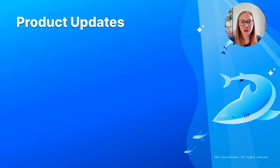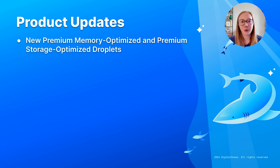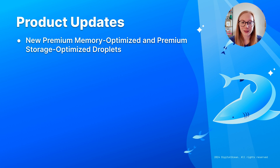First, we're excited to share some new product updates for droplets, app platform, and more. We have just announced the release of premium memory-optimized and premium storage-optimized droplets. These have faster networking performance than regular droplets and include up to 10 gigabytes of outbound data transfer, which is useful for bandwidth-intensive use cases.